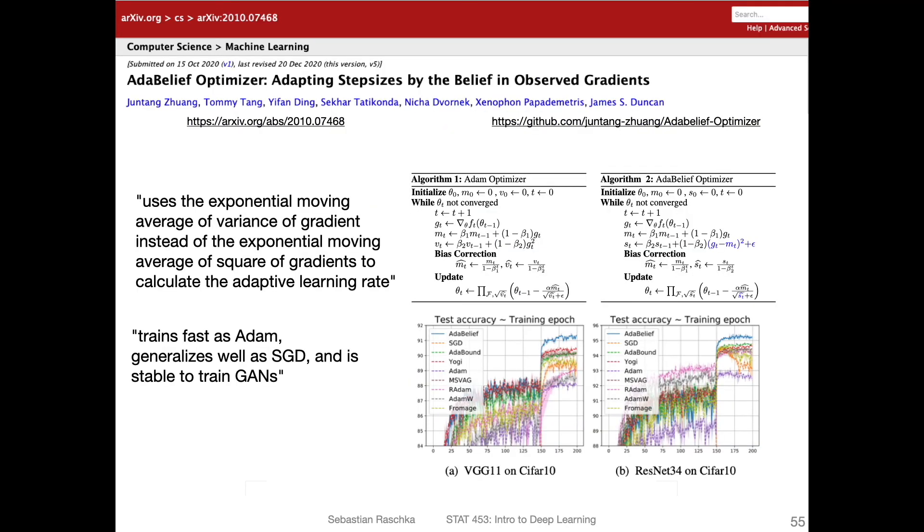That being said, there was recently also a new optimizer that was pretty popular, or became very popular very quick. I saw that in several discussion forums. There's this AdaBelief optimizer, which is essentially a modification of Adam. Here on the left-hand side is the regular Adam optimizer, and on the right-hand side is this AdaBelief optimizer and in blue you can see the little changes to it.